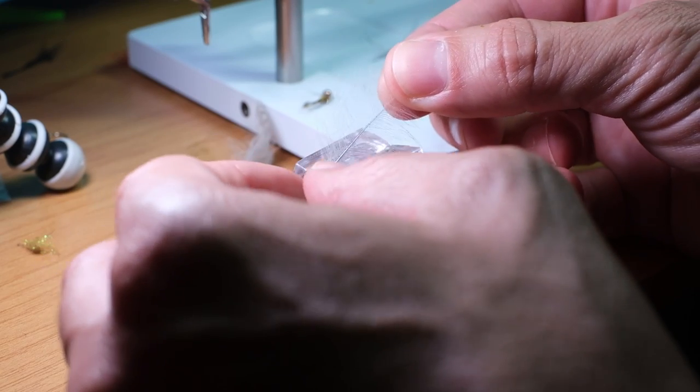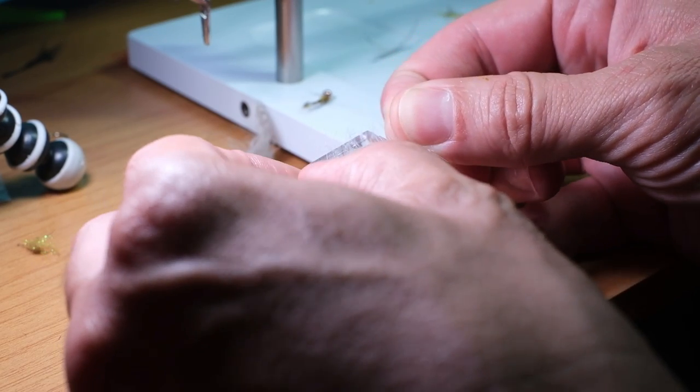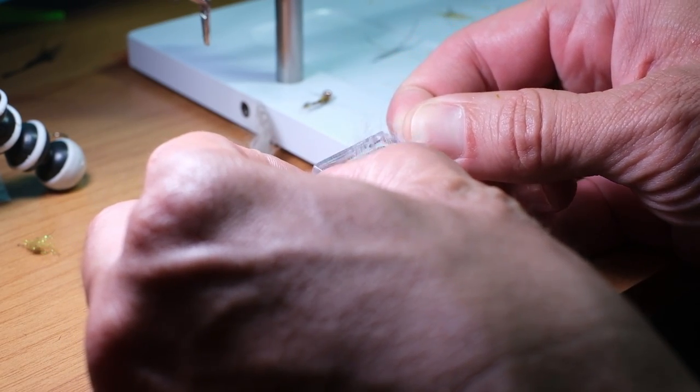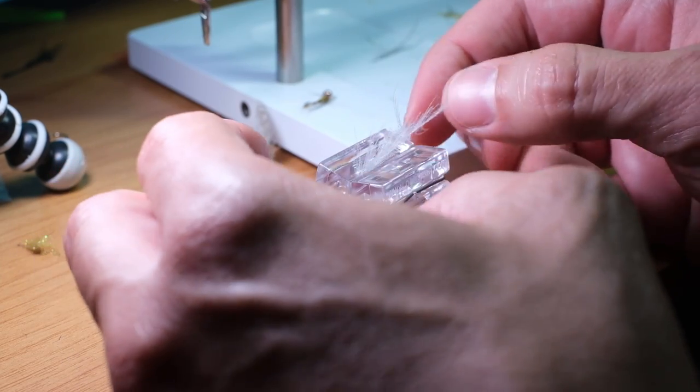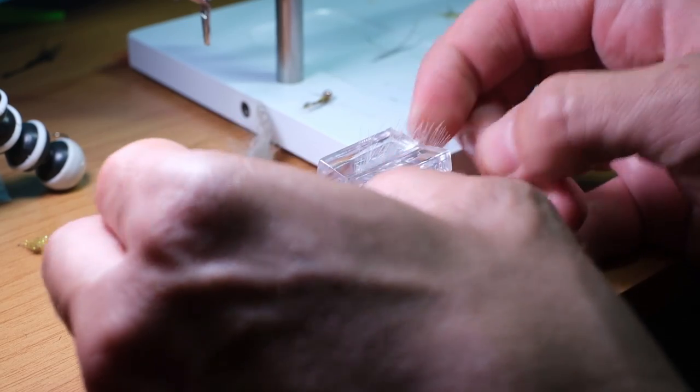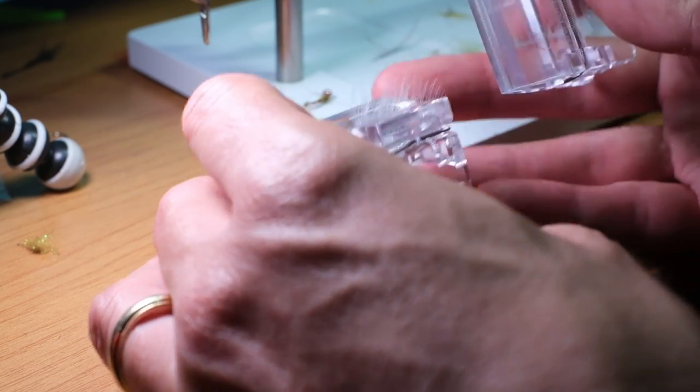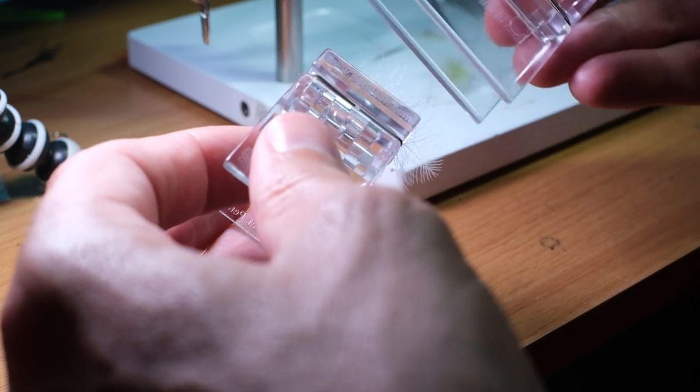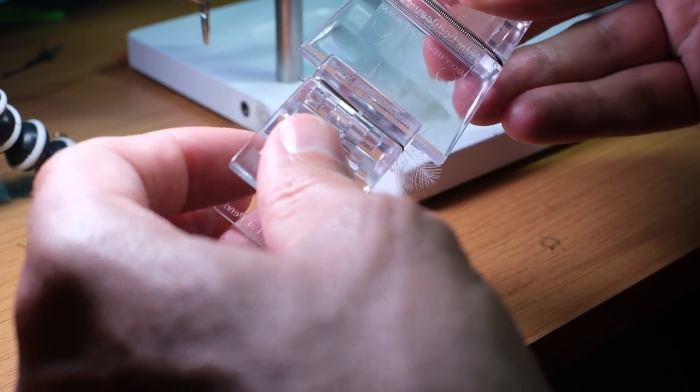This allows you to get the most barbules from the feather. Instead of just one side, you can get both sides. Transfer the barbules over to a clamp and cut off the stem.